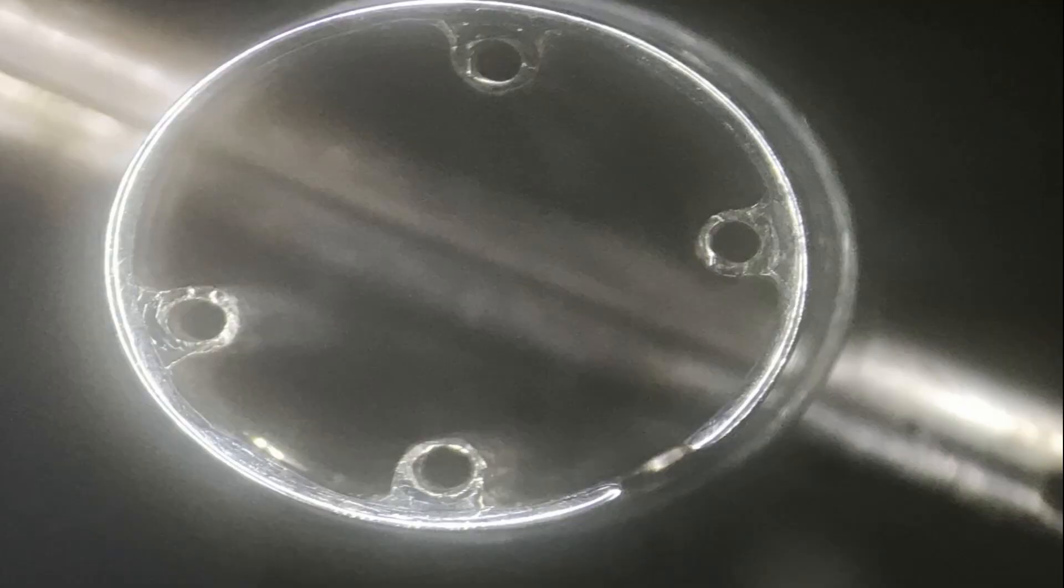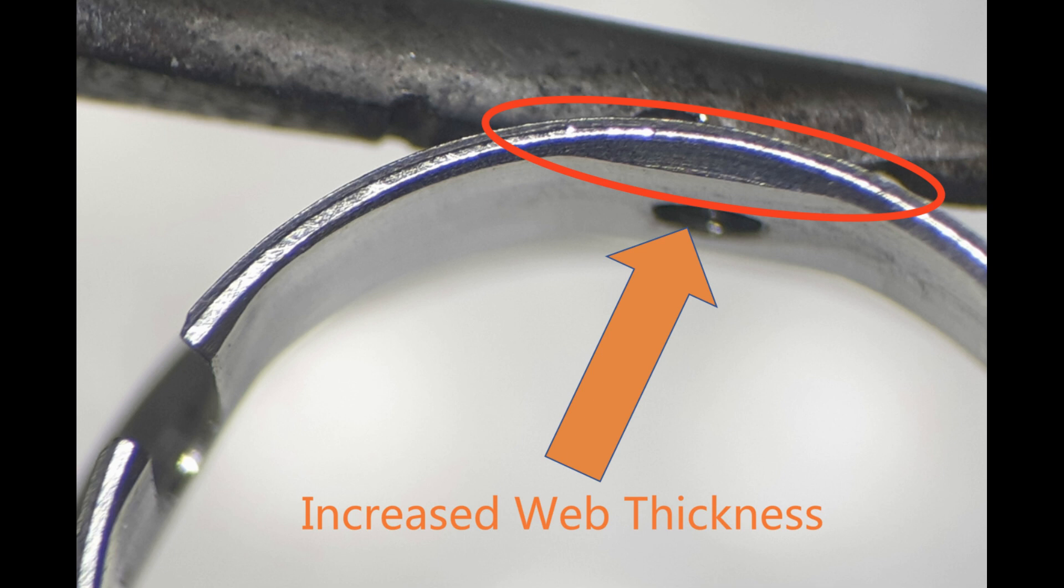In addition to this, having a thicker web will give more material for extra threads and this will help better secure the bending section in the coil pipe assembly.